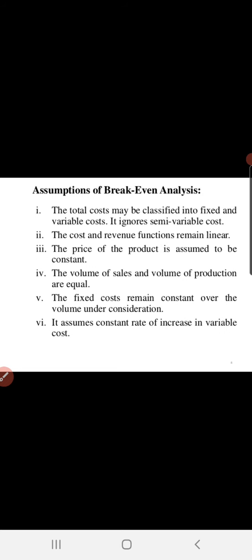Some assumptions of break-even analysis: total cost may be classified into fixed cost and variable cost, ignoring semi-variable cost. The cost and revenue function remains linear — we assume they continuously increase, because if they are non-linear it creates too many fluctuations and it is very difficult to find the break-even point. In reality there are fluctuations but we assume linear proportion. The price of the product is assumed to be constant. The volume of sales and volume of production are equal. Fixed cost remains constant over the volume under consideration.